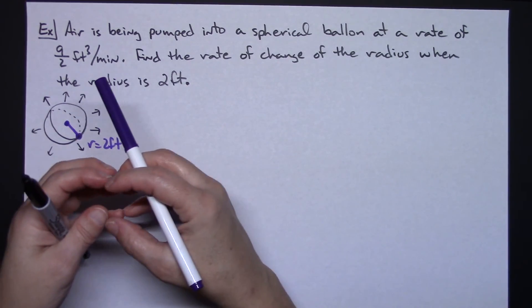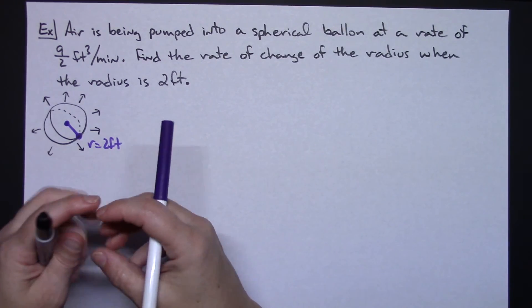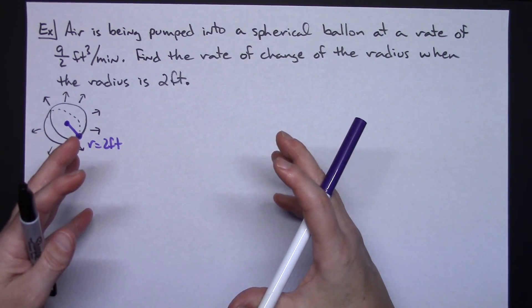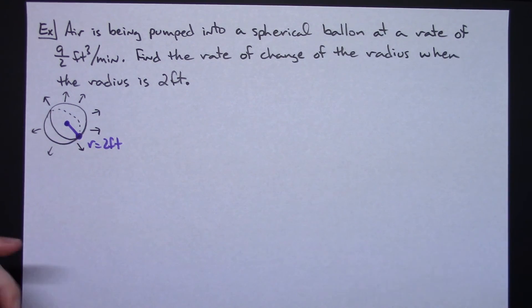Initially when you start putting air into a balloon, it starts to go really fast, but then the more air that you put into it, the slower it goes. That rate is changing. So let's go through our story problem here and see if we can't find our given.